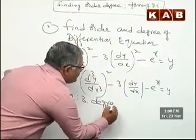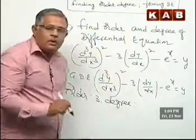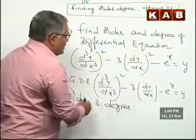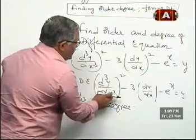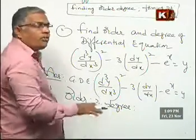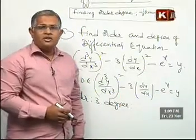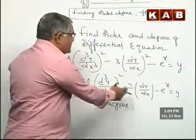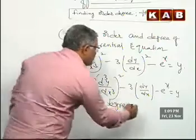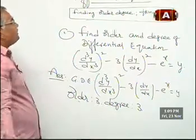Now come to the degree. Degree is the power of the highest derivative when the differential equation is expressed as a polynomial. The highest derivative is d³y/dx³. In the last problem we were forced to modify the equation by raising to a power. Here, such a step is not needed — it is already expressed as a polynomial. So the degree is 2. Order is 3, degree is 2. This concludes the second question.